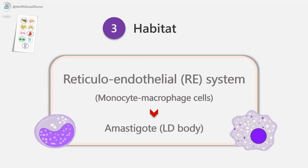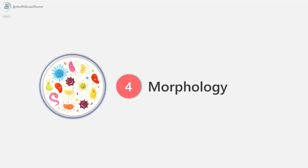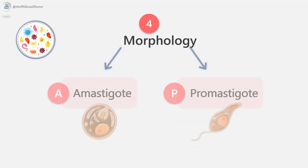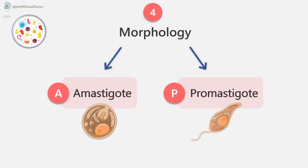Habitat: The habitat is the cells of the monocyte-macrophage system — the reticuloendothelial system of man. The organs involved include the liver, spleen, and bone marrow, where they are present as amastigotes. They are found mostly within macrophages in the spleen, liver, and bone marrow, and less often in the skin, intestinal mucosa, and mesenteric lymph nodes. In the midgut of the sandfly, they are seen as promastigotes.